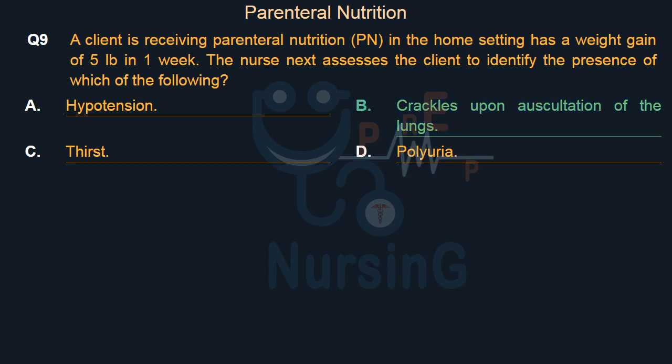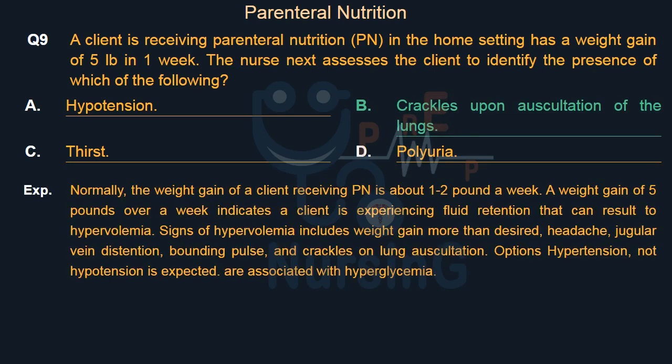Right answer is Option B: Crackles upon auscultation of the lungs. Normally, the weight gain of a client receiving PN is about 1–2 pounds a week. A weight gain of 5 pounds over a week indicates the client is experiencing fluid retention that can result in hypervolemia. Signs of hypervolemia include weight gain more than desired, headache, jugular vein distension, bounding pulse, and crackles on lung auscultation. Hypertension — not hypotension — is expected.